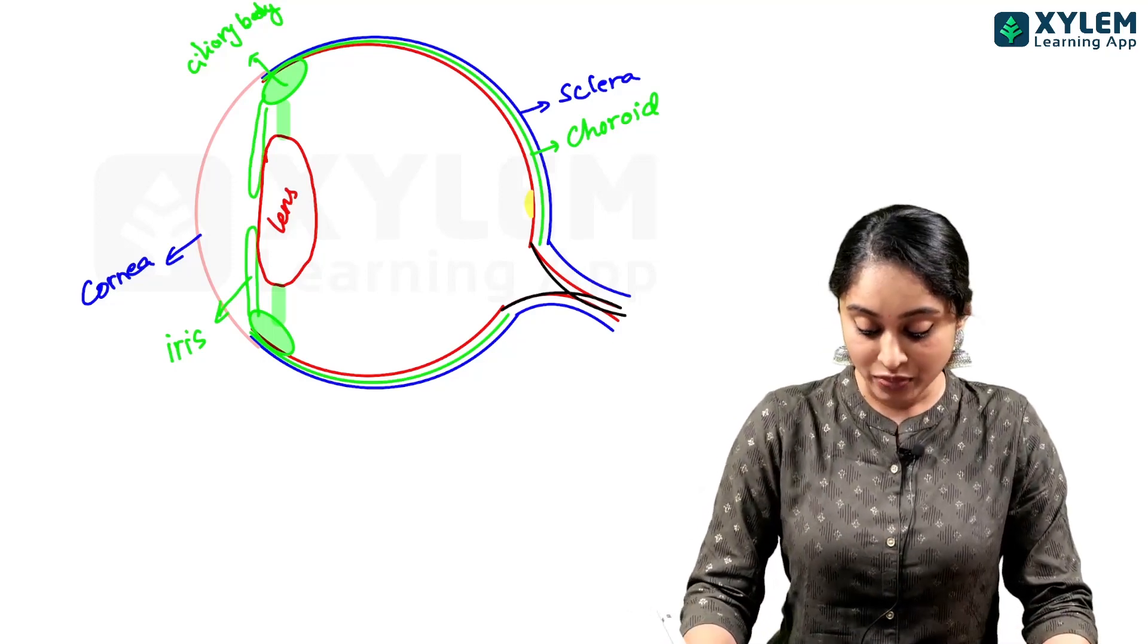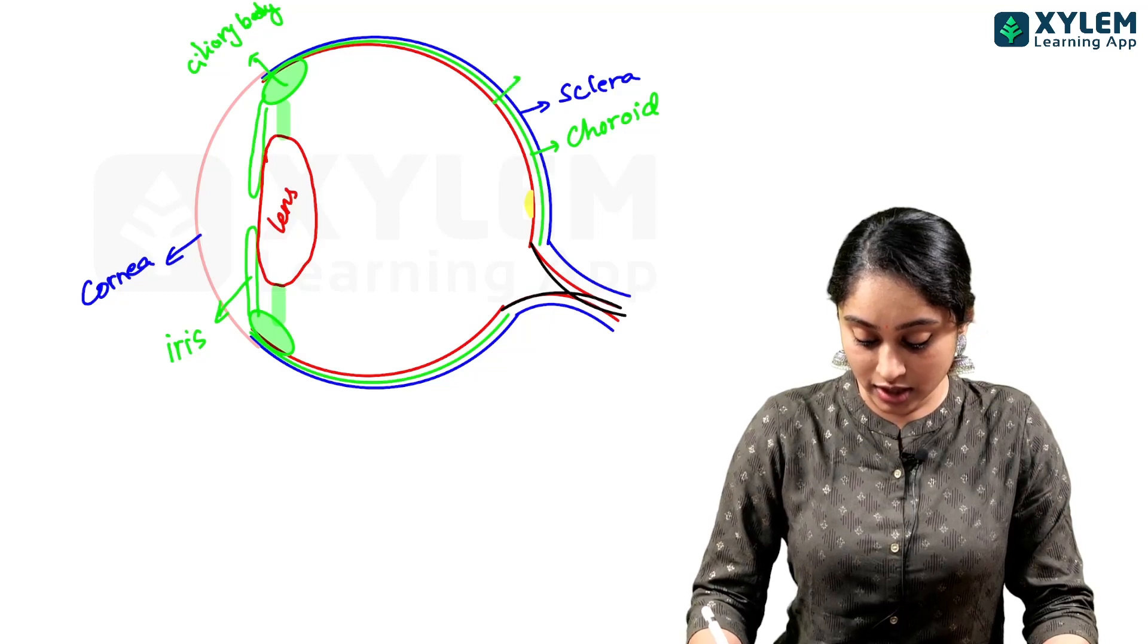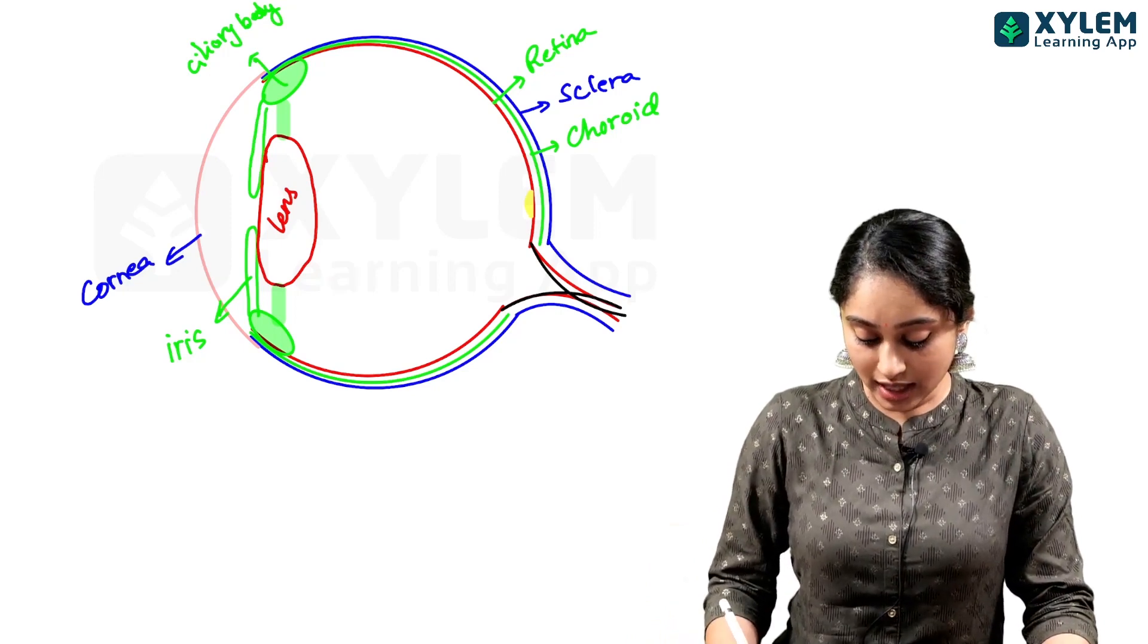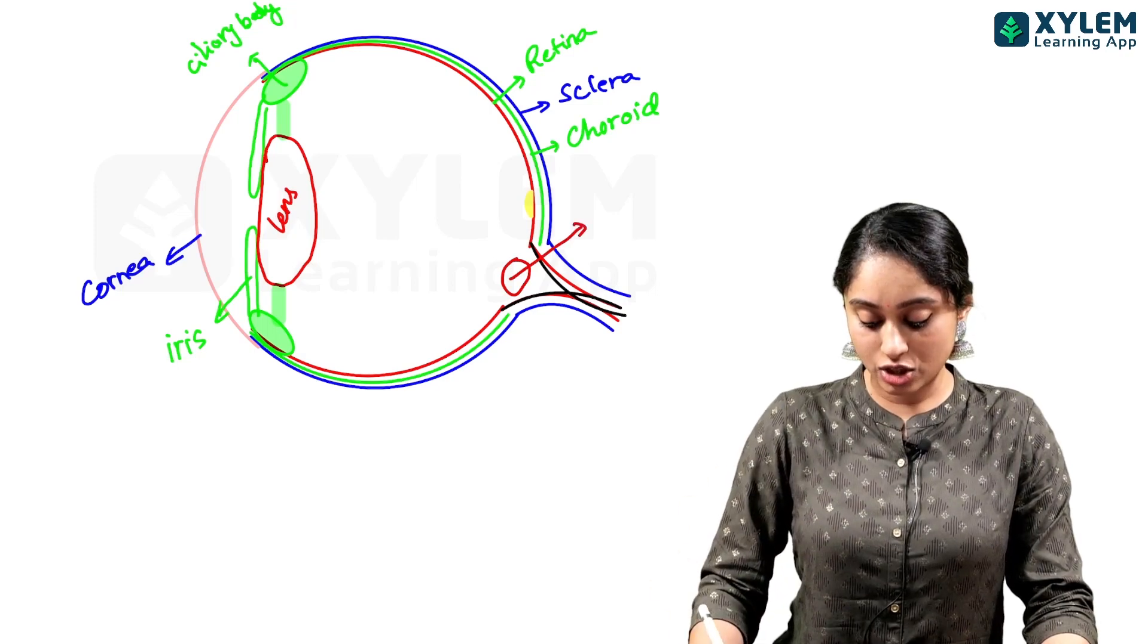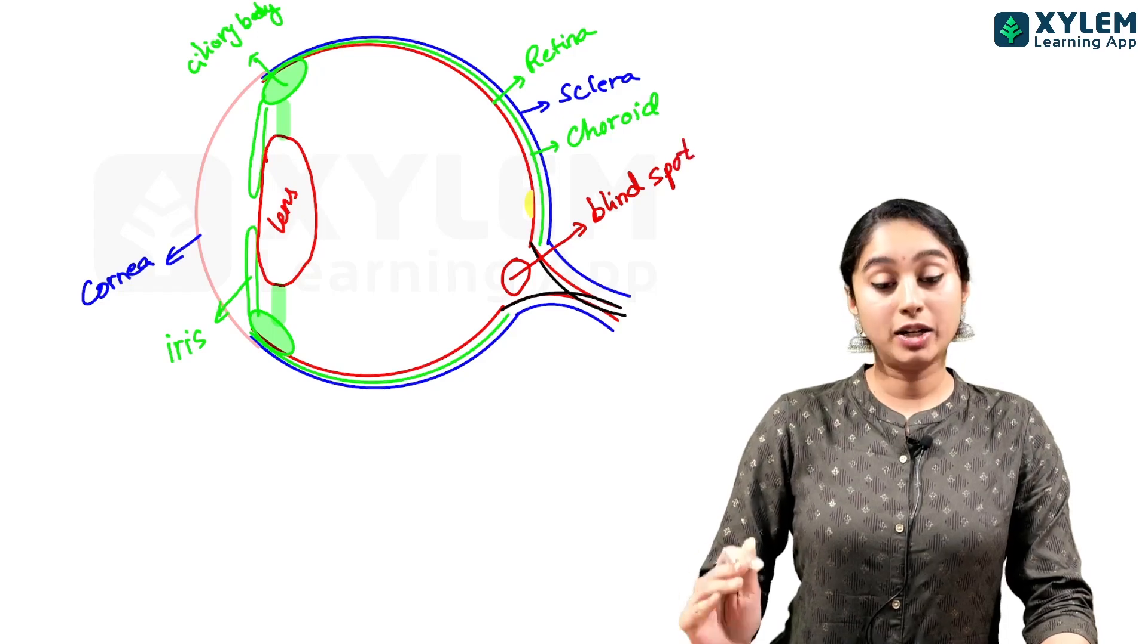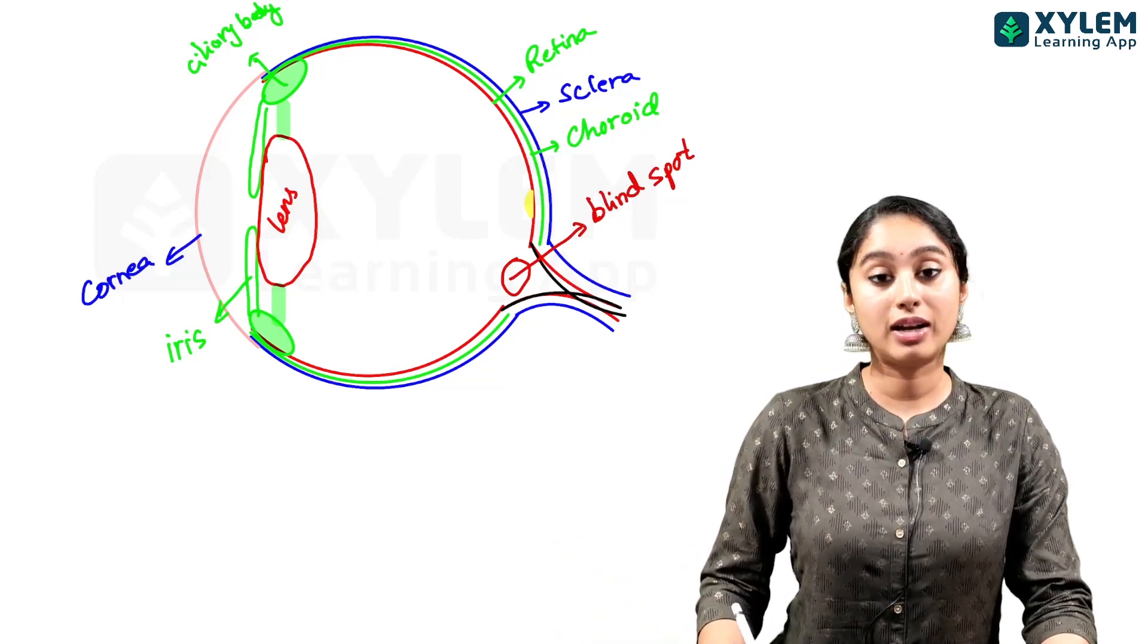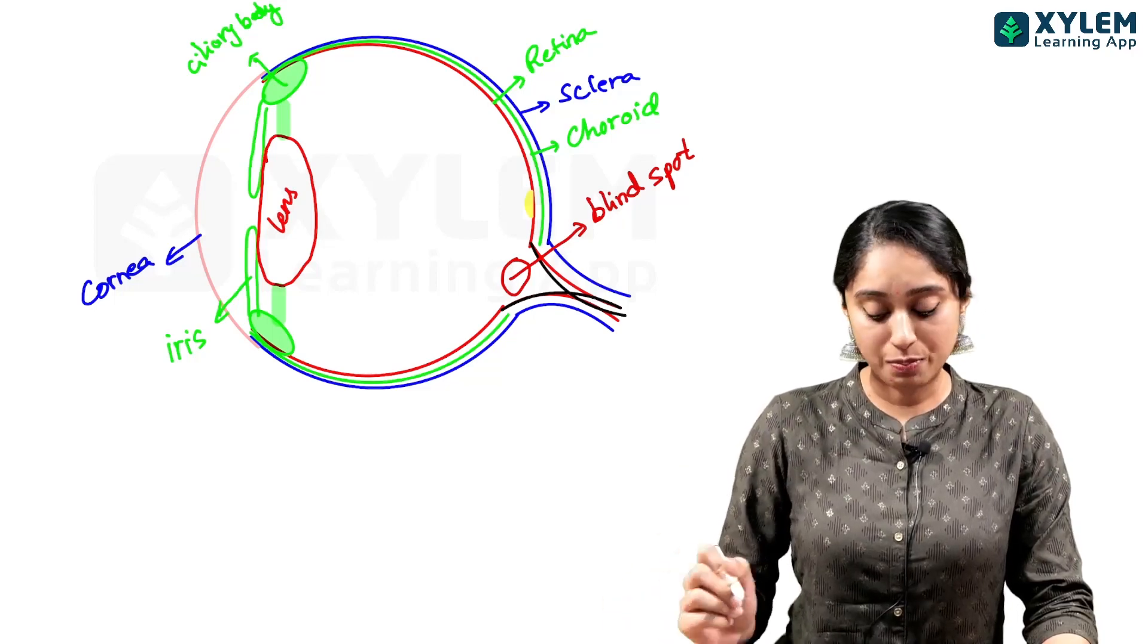The innermost layer is the retina. If you look at the retina, there is one portion here which is like a pit sort of region. This is called the blind spot. That is why it is called the blind spot.